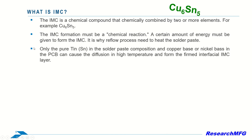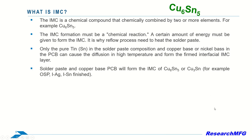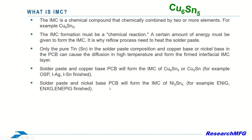Only pure tin in the solder paste composition and copper-base or nickel-base in the PCB can cause diffusion at high temperature and form the interfacial IMC layer. Solder paste with copper-base PCB will form the IMC of Cu6Sn5 or Cu3Sn — for example, OSP, immersion silver, or immersion tin finishes. Solder paste with nickel-base PCB will form the IMC of Ni3Sn4 — for example, ENIG, ENXG, or ENEPIG finishes.